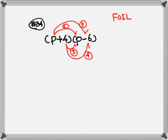Step 1: p times p is p squared. Step 2: p times negative 6 becomes negative 6p. Step 3: 4 times p will be plus 4p. Step 4: 4 times negative 6 becomes negative 24. After that, we're going to combine like terms — usually the two like terms are the two numbers in the middle.